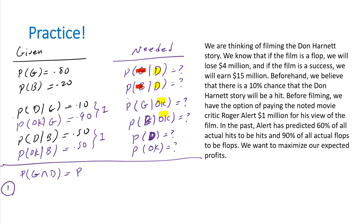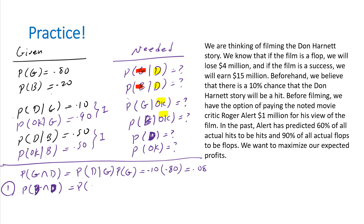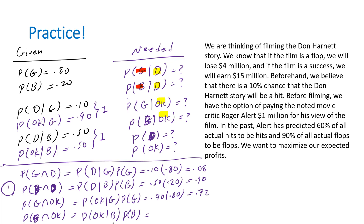Joint probability of good and defective = P(defective | good) × P(good) = 0.10 × 0.80 = 0.08. Joint probability of bad and defective = P(defective | bad) × P(bad) = 0.50 × 0.20 = 0.10. Joint probability of good and okay = P(okay | good) × P(good) = 0.90 × 0.80 = 0.72. Joint probability of bad and okay = P(okay | bad) × P(bad) = 0.50 × 0.20 = 0.10.